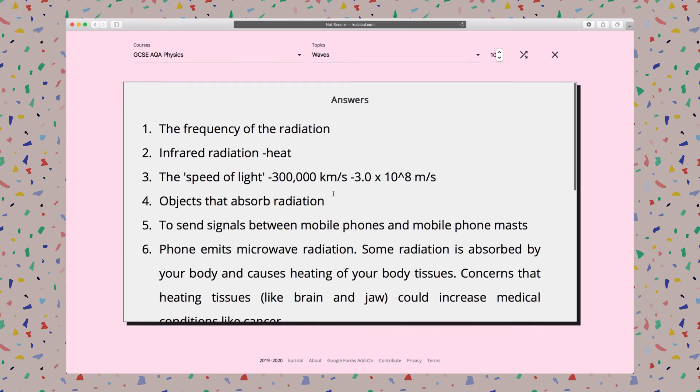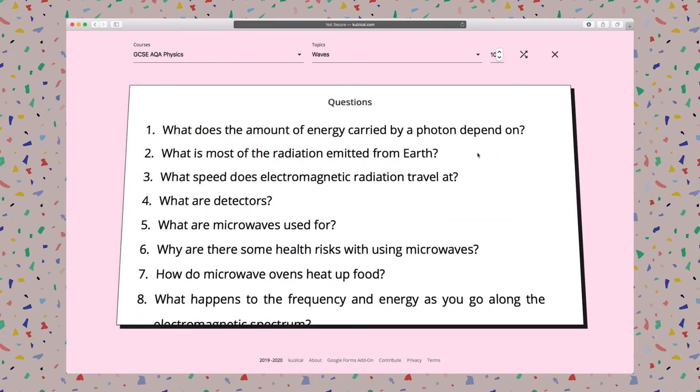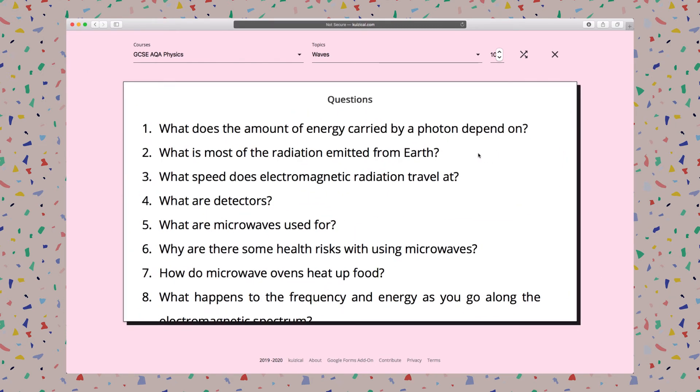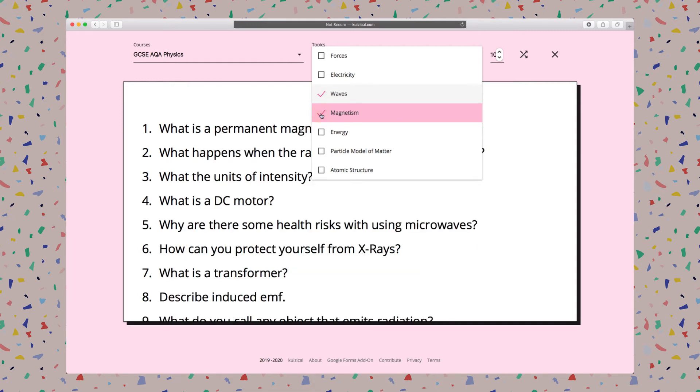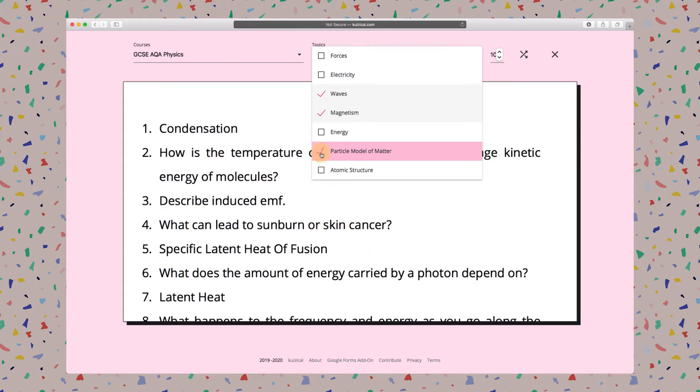It also supports more than one topic or more than one course. Let's say I would like Waves and Magnetism, so I can select this checkbox. There we go. And I want Particle Model of Matter as well. There we go.